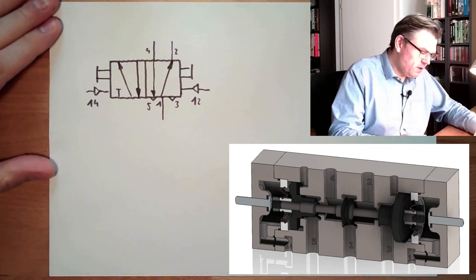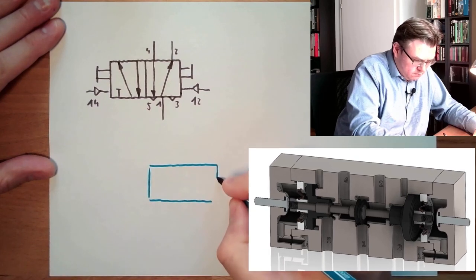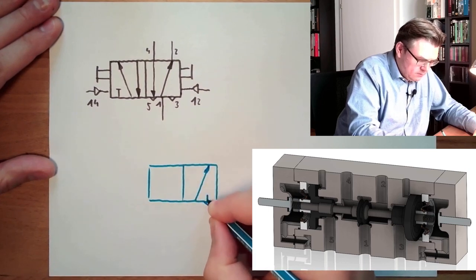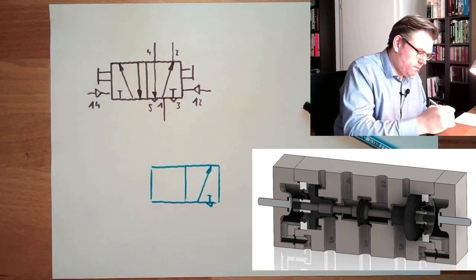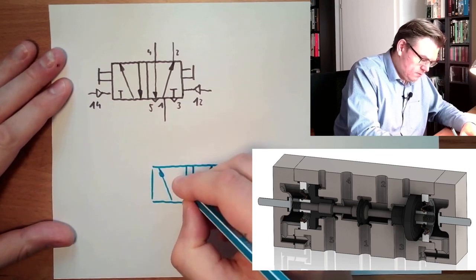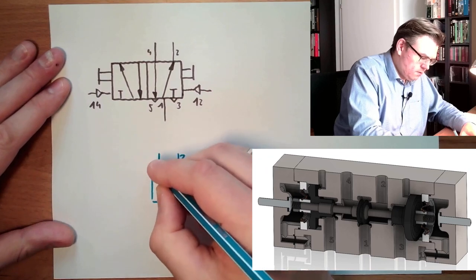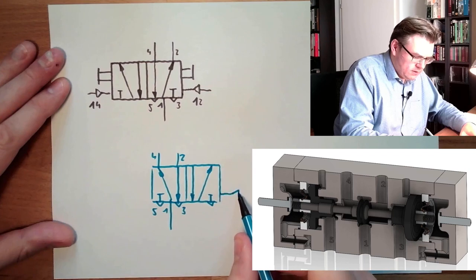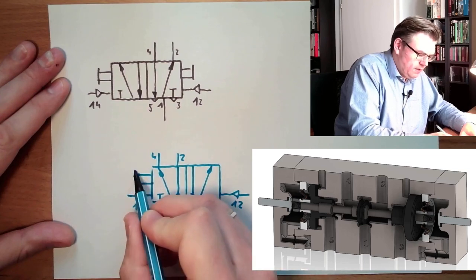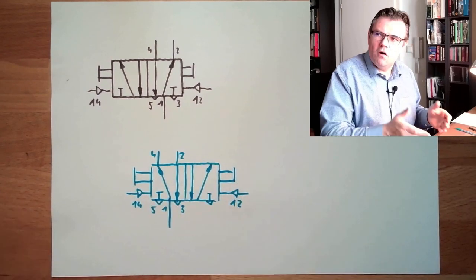This is one switching position. Second switching position is, well, let's just move to the right. The symbol itself will remain the same. So on this side we have this, oh I forgot here, block. On the right-hand side we have this, on the left-hand side we have this. But now the left-hand side is connected. Of course, it's still pneumatically operated, and of course we are still having the possibility to switch this by hand. So these are the switching positions of exactly that valve.